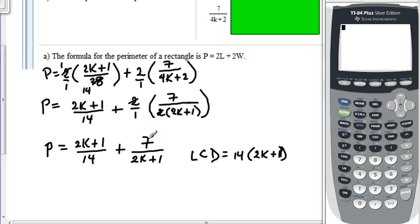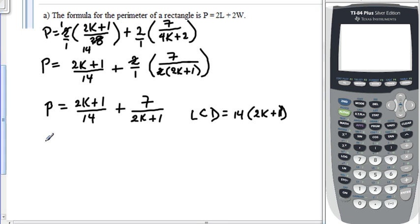Let's fix that up here a little bit. So, 14 times 2K plus 1. Notice that from the first expression, what we're missing is the 2K plus 1. From the second expression, what we're missing is the 14. So, this is what we're going to do.